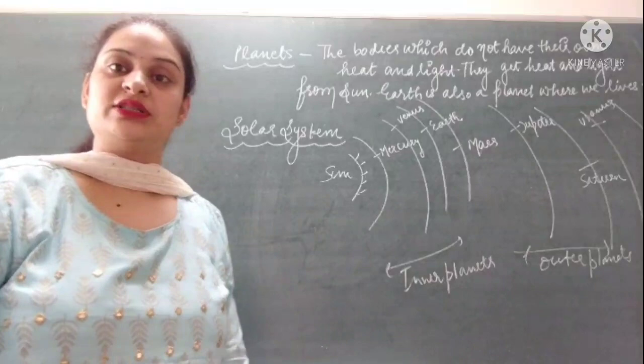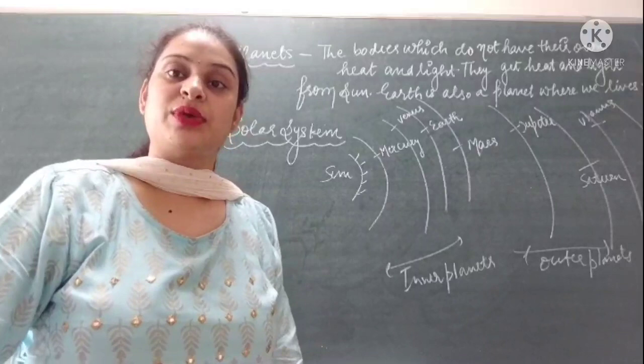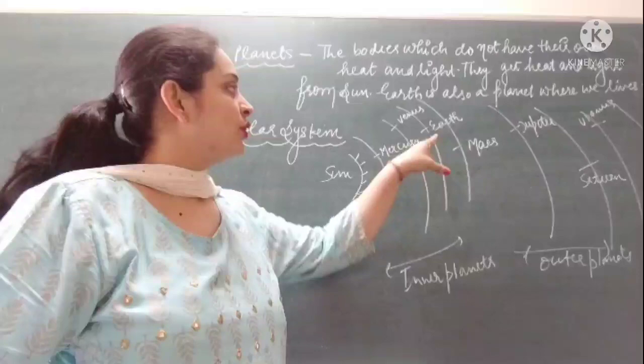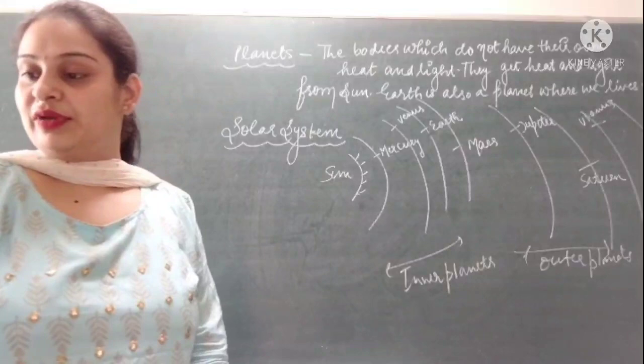Here you can see the different planets shown in the solar system. Earth is the only planet which has air, water, and land. The presence of oxygen is very important for survival, and that's why, from all these planets, Earth is the only unique planet in which life exists, due to the presence of these main components: land, air, and water.